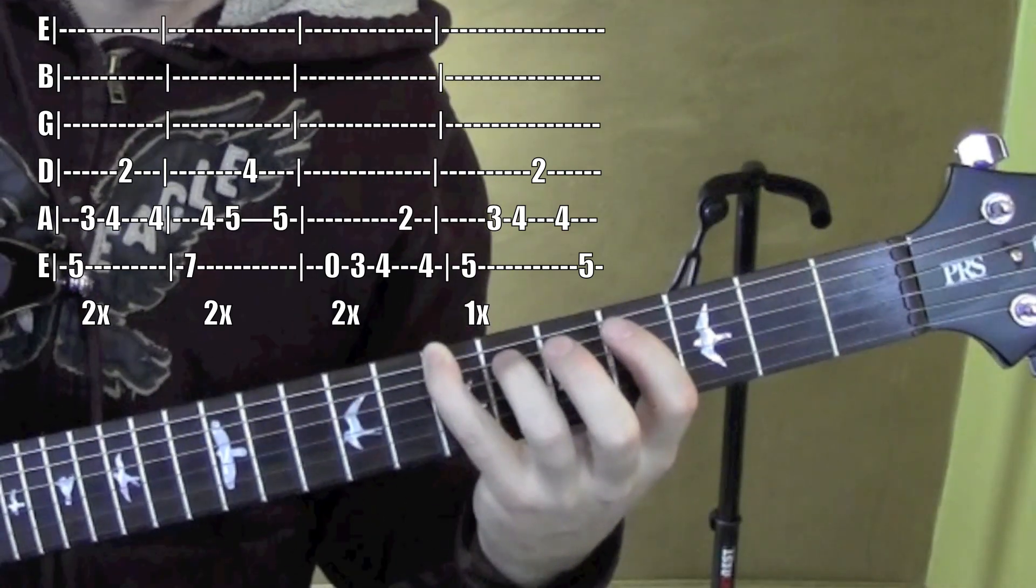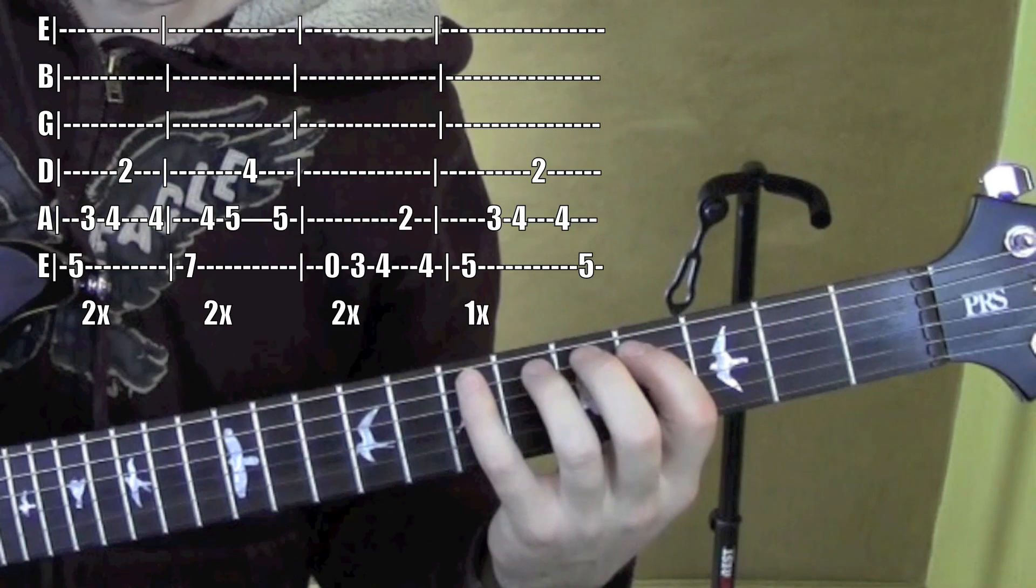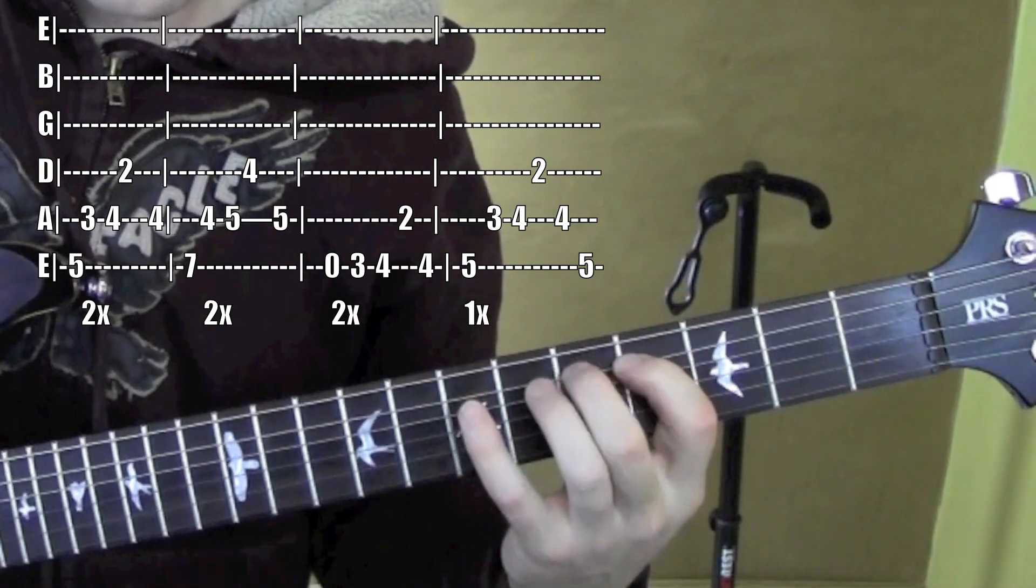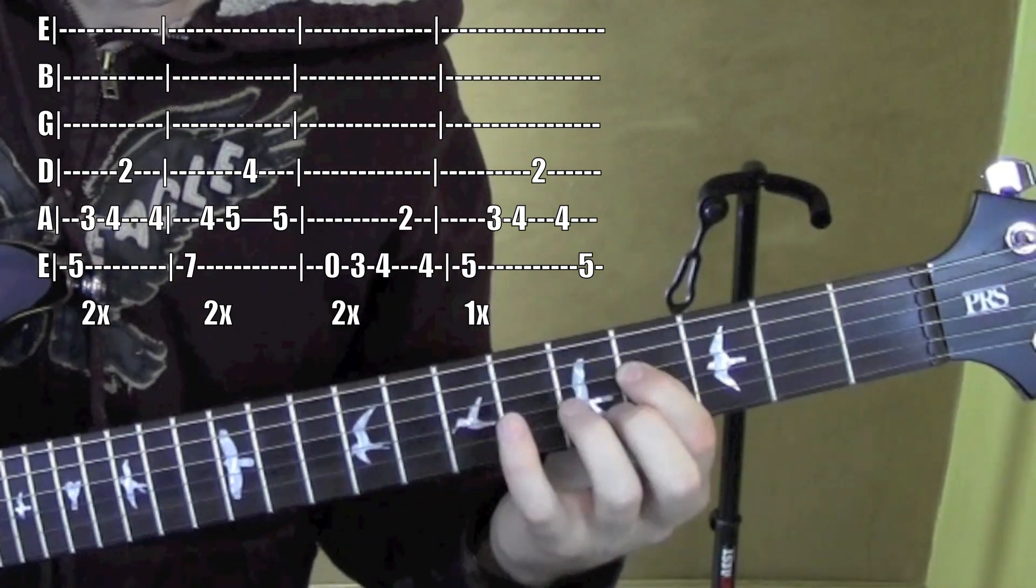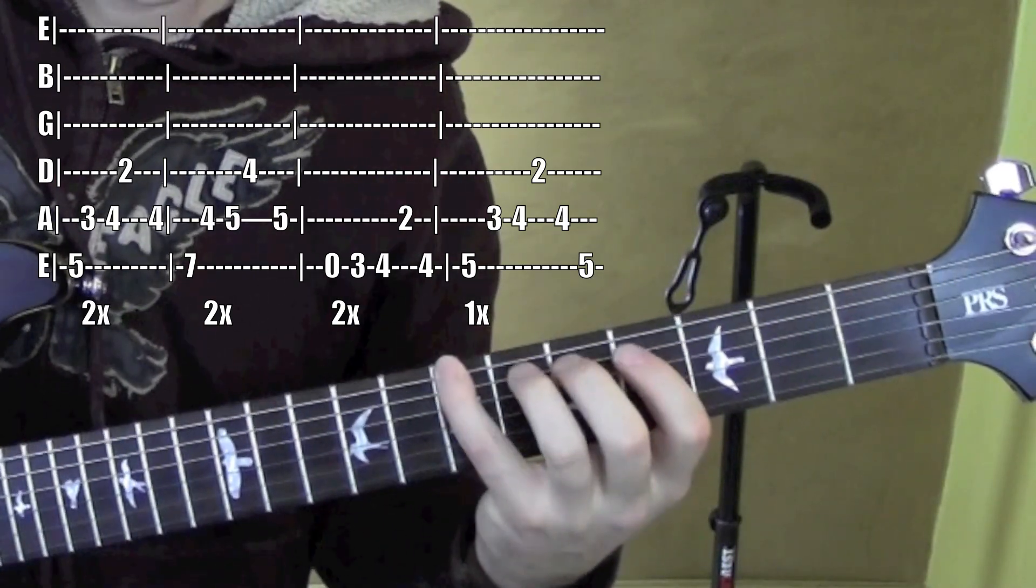All right, now we're on to 7 on the 6th string, into the 5th string, 4, 5, to the 4th fret on the 4th string, back to 5 on the 5th. Good. A couple more times.